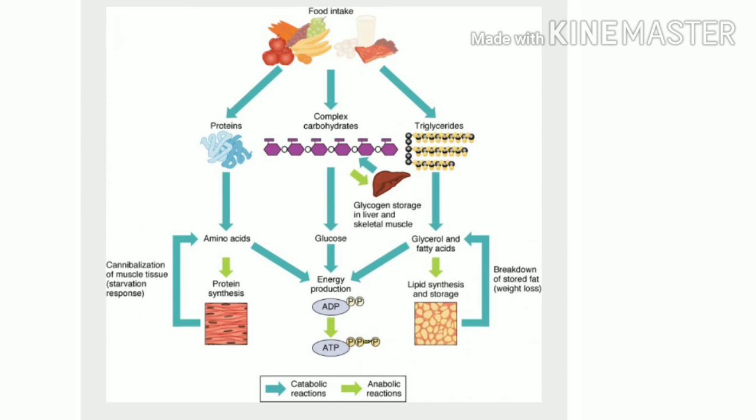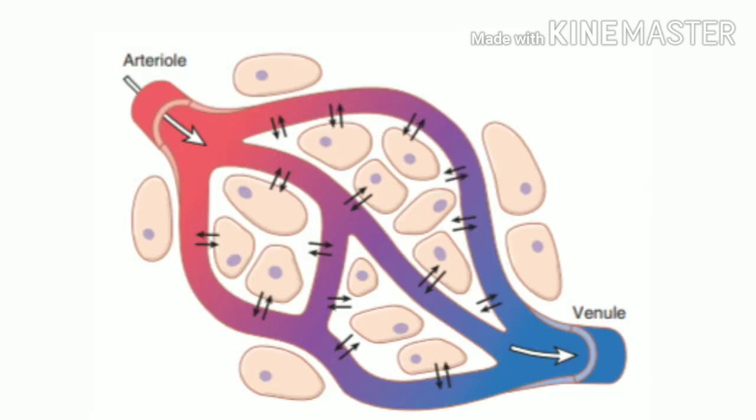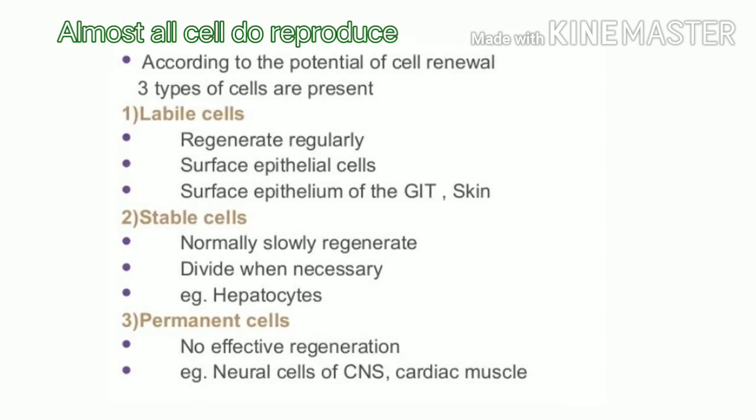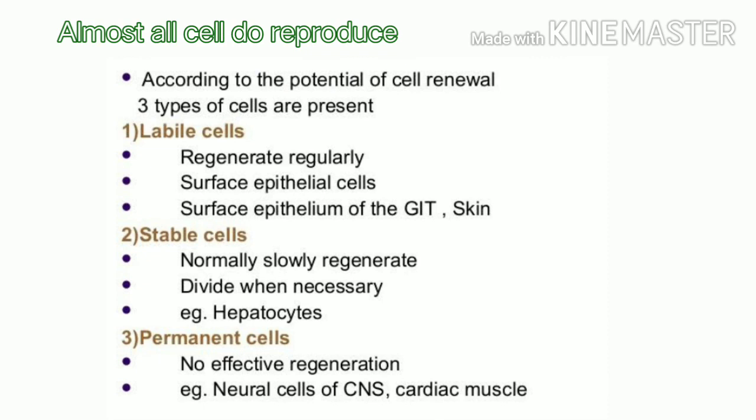The general chemical mechanism for changing nutrients into energy is basically the same in all cells. All cells deliver the products of chemical mechanisms into the surrounding medium, and the third similarity is that almost all cells reproduce.